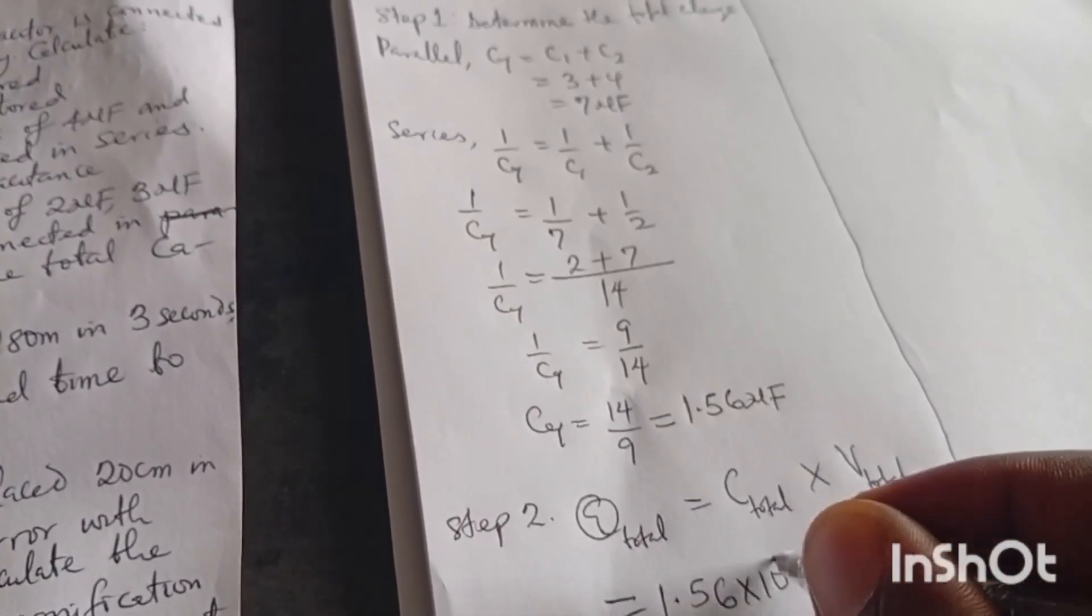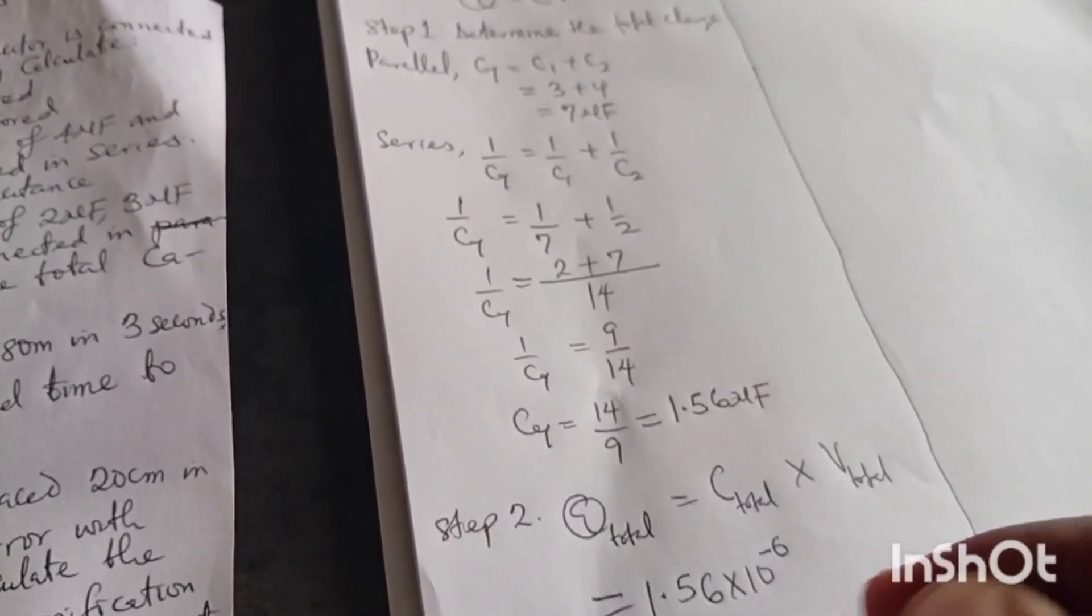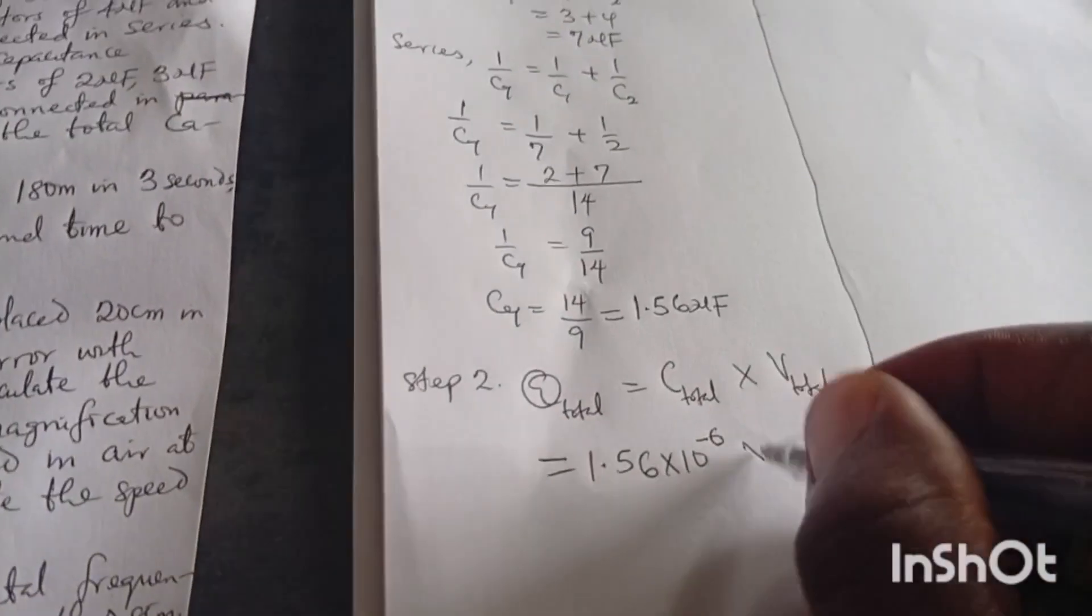So total charge, that's what we'll find. So we come, what's what we got here? 1.56 microfarad, that is times 10 to the minus 6. Microfarad means times 10 to the minus 6. Now times voltage which is 12.